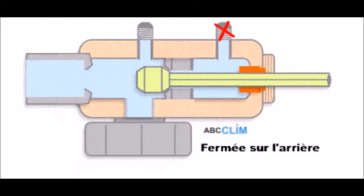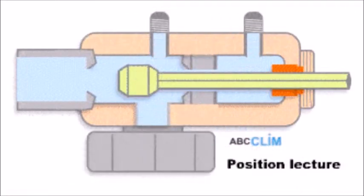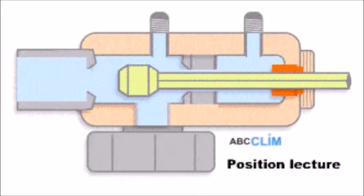Essayons de préciser ces 3 positions. Ici, la vanne est en cale arrière, c'est-à-dire que le carré de manœuvre a été dévissé dans le sens antihoraire. On voit que la prise de pression manométrique, sur laquelle on va raccorder notre manomètre, n'est pas accessible. Ensuite, nous avons la position de lecture, aussi appelée cale de lecture. On recherche cette position pour pouvoir mesurer les valeurs de BP et de HP via la prise de pression qui est maintenant ouverte — cela est possible car le carré de manœuvre a été serré dans le sens horaire. Le pointeau s'est déplacé vers la gauche, ce qui permet au fluide frigorigène de traverser la chambre de prise de pression manométrique.